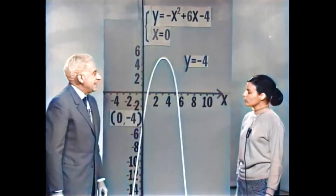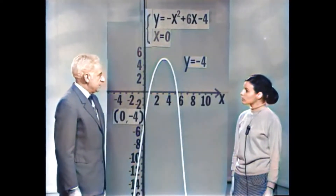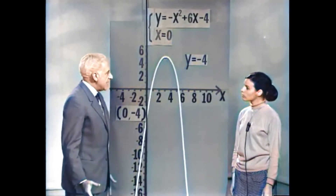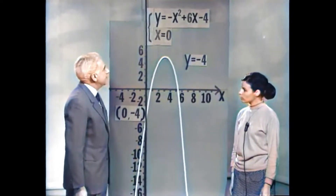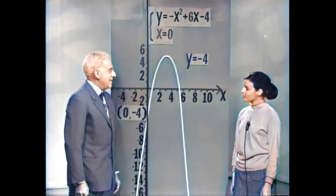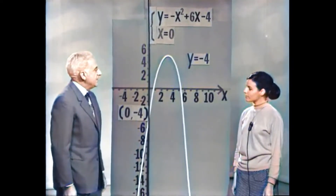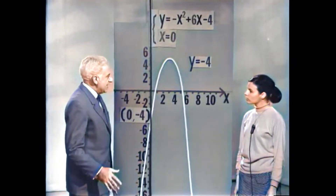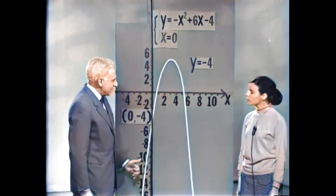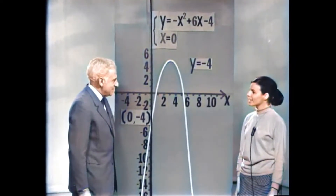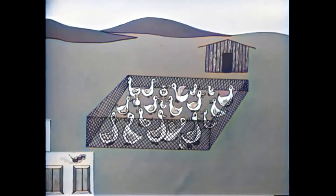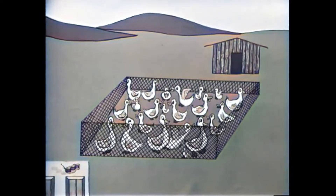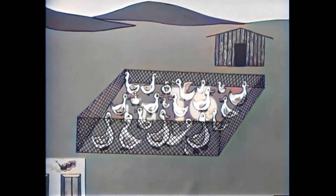עכשיו ראינו את החשיבות של הפרמטר M. בעזרתו קיבלנו תמונה ברורה על כל האפשרויות של פתרונות. דבר דומה אפשר לראות בבעיה של הגדר המקיפה את הברווזייה — חלקת שדה מלבנית ששטחה 16 מטרים מרובעים.